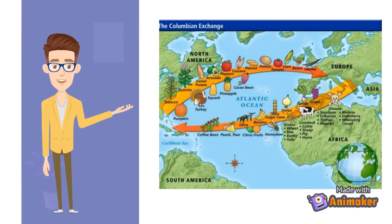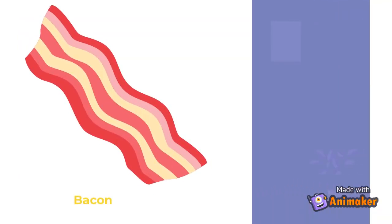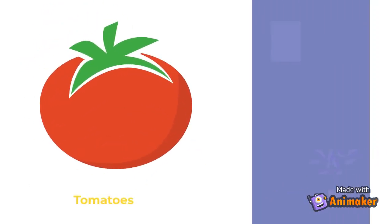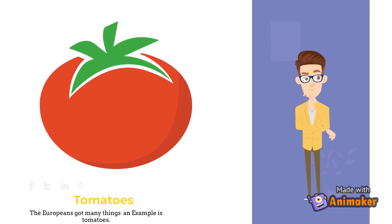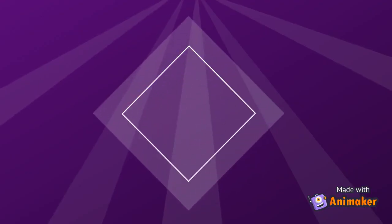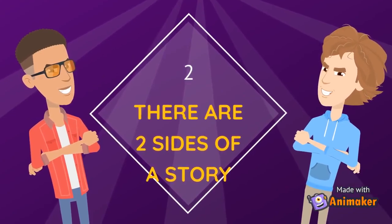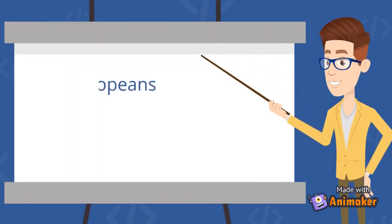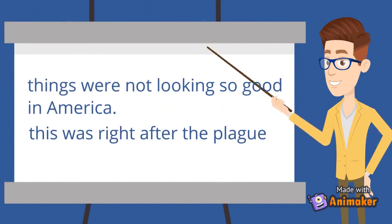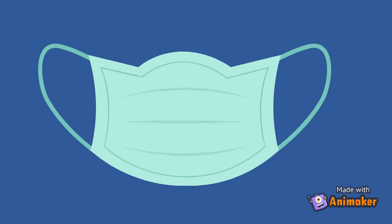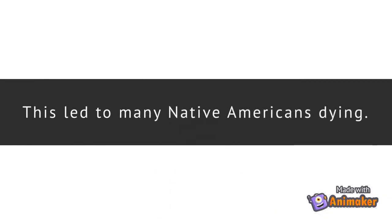America got things like bacon, while Europe got tomatoes. Can you imagine Italy without tomatoes? But we can't forget that there are two sides to a story. While Europe was making money and Italy was finally making pizza, things were not looking so good in America. Remember, these people had never met before, and this was right after the plague ended in Europe. This meant that America was exposed to new diseases, which led to many Native Americans dying.